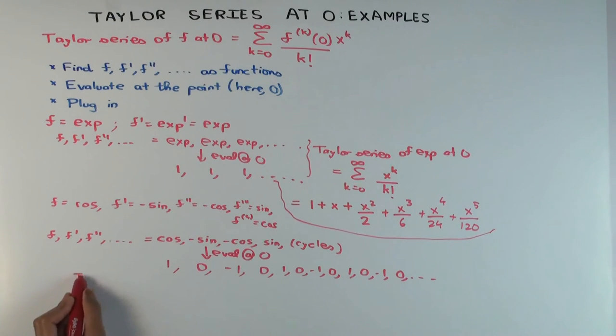Now if I want to write down the Taylor series, what's it going to be? One minus x squared over 2 factorial plus x^4 over 4 factorial.